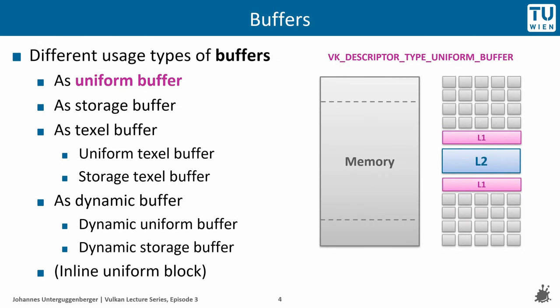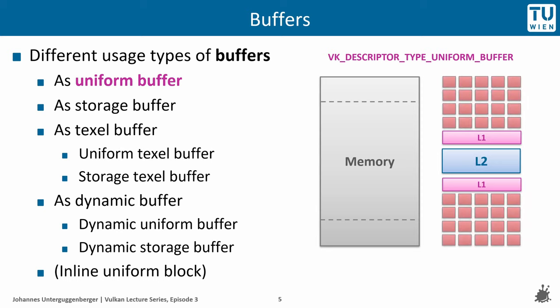Let us now take a look at the different usage types of buffers. As a first usage type, a buffer can be used as a so-called uniform buffer, meaning that it remains uniform during the execution of a command, like a draw call for example. That means a buffer stored somewhere in GPU memory is loaded into the L2 cache and further into an L1 cache for usage during command execution. It can also be loaded into multiple L1 caches if multiple clusters work on a command, which is the standard case.